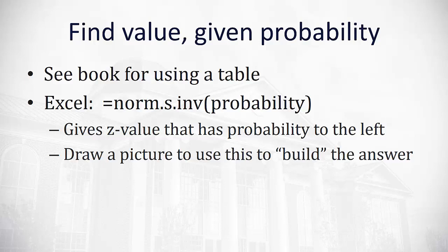In Excel, we'll hit norm equals norm.s dot, and instead of distribution, we're going to write inv for inverse, meaning we're going backwards. We have the probability, we want the value.